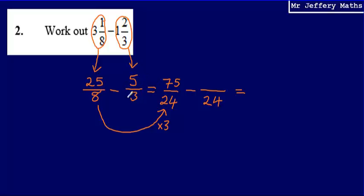Then I'm going to take 5 thirds and do exactly the same. So what have I multiplied 3 by to reach 24? I've multiplied it by 8, so I'm going to do exactly the same to that numerator 5. So 5 multiplied by 8, which is going to give me 40.